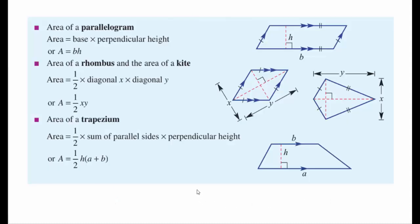In summary, for our four special quadrilaterals: parallelogram — area is base times height; rhombus — area is half times diagonal x times diagonal y; trapezium — half of the height times (a plus b); and the kite — same again, area is half of the product of the diagonals. I hope that's helpful, thanks very much for watching.